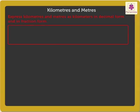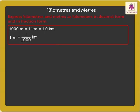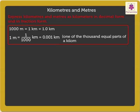We know that 1000 METERS is equal to 1 KILOMETER, which is expressed as 1.0 KILOMETER as a decimal. 1 METER is expressed as 1 upon 1000 KILOMETER as a fraction, which is equal to 0.001 KILOMETER in decimal form. It is one of the 1000 equal parts of a KILOMETER.